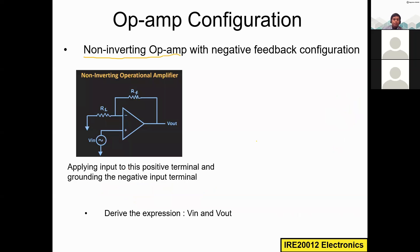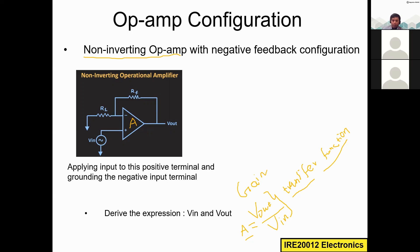Now we have to derive the expression for Vin and Vout. Vout divided by Vin is the gain, so once you find Vout and Vin you can easily find the gain A using the formula: A = Vout / Vin. We also call this the transfer function. We will derive the mathematical expression using Ohm's law and Kirchhoff's law.